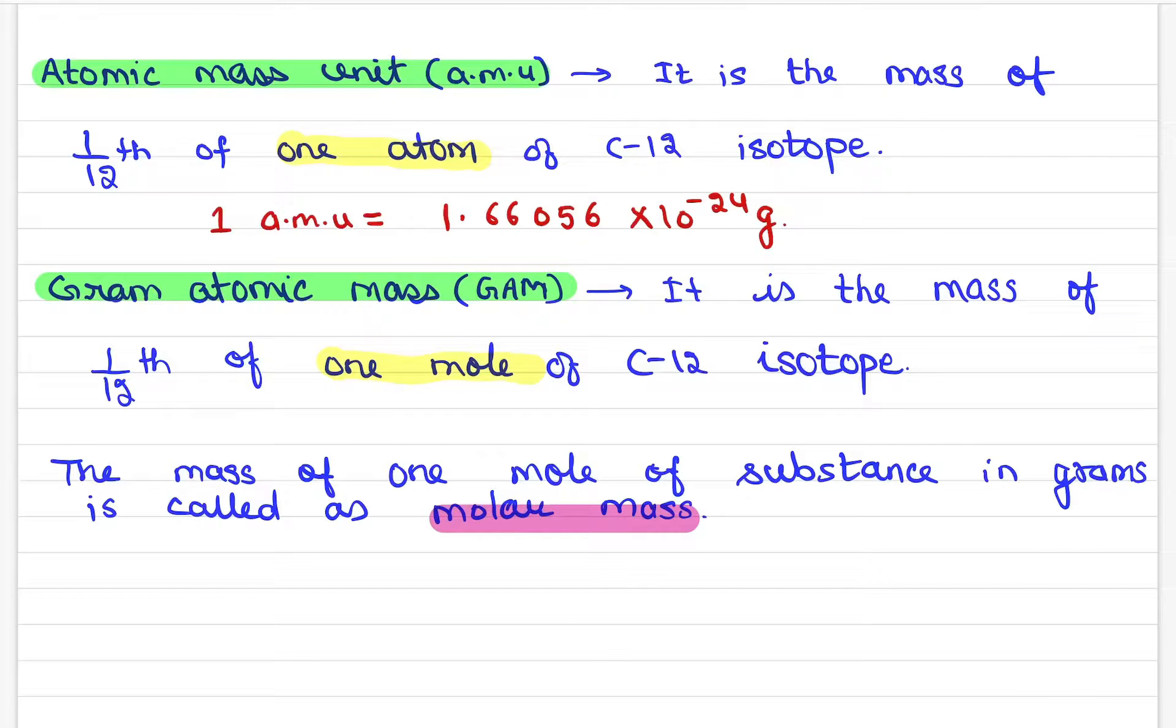1 AMU is 1.66056 × 10^-24 gram. You can say that 1 mole is nothing but 6.022 × 10^23 × 1.66 × 10^-24 gram.